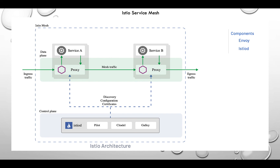Some key features include fine-grained traffic control, circuit breakers, retries, failovers, and security as a main feature. The two main components are istiod as the control plane — the brain — and the Envoy proxy which is part of your implementation and manages the data plane. After installation, you'll have the Istio gateway and istiod running. The gateway works with the daemon to gather information and route requests to the Envoy proxies.